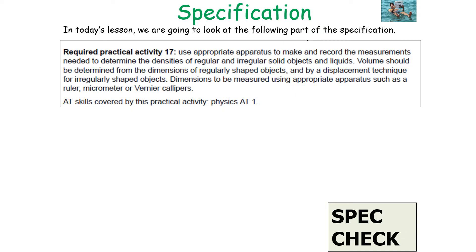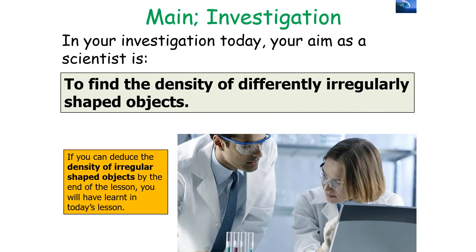This is actually part of the required practicals for GCSE combined science. It's required practical activity 17: use the appropriate apparatus to make and record measurements needed to determine the density of an irregular solid object, and that should include the displacement technique for irregular shaped objects to measure the volume.